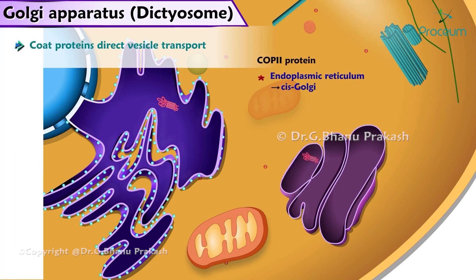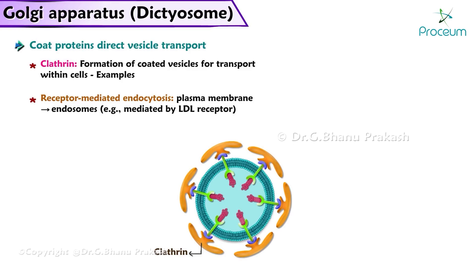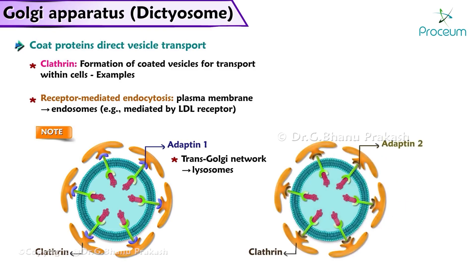The third protein is clathrin, which is responsible for the formation of coated vesicles for transport within cells — for example, receptor-mediated endocytosis, where the plasma membrane goes to endosomes, mediated by LDL receptors. Note that clathrin plus adaptin-1 is involved in the transfer of the trans-Golgi network to the lysosomes, and clathrin plus adaptin-2 involves the plasma membrane to the endosomes, or endocytosis.